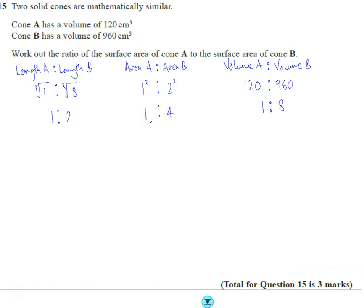So, well we're told that work out the ratio of the surface area of A to the surface area of B. We've done that, the area of A to the area of B is 1 to 4.